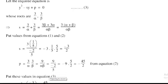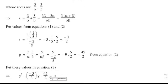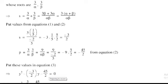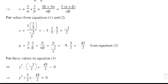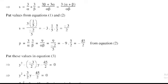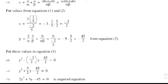Substituting the values of S and P into Equation 3: y² − (−3/2)y + (−45/2) = 0. Multiplying both sides by 2: 2y² + 3y − 45 = 0. This is the required solution.